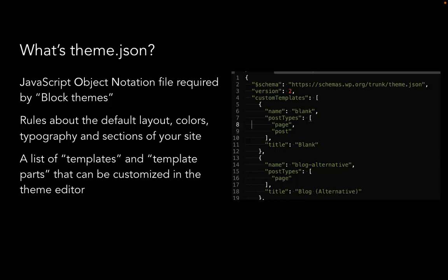Tied in with full site editing is this new file in modern block themes called theme.json. JSON stands for JavaScript Object Notation, and it's required for a theme to be considered a block theme. It looks nothing like HTML or CSS — it's much more abstract, with all these colons and brackets, indentation levels and commas. But it's something I've been trying to wrap my head around, because if I want to keep using WordPress, I need to figure it out.